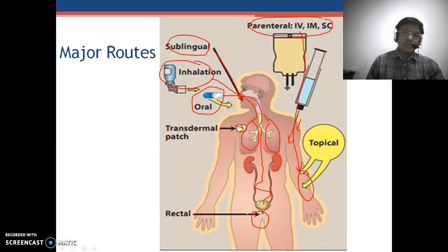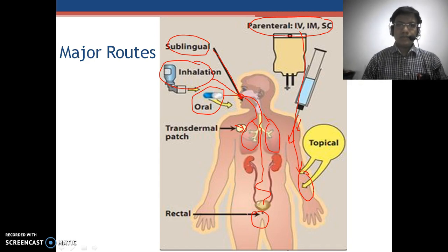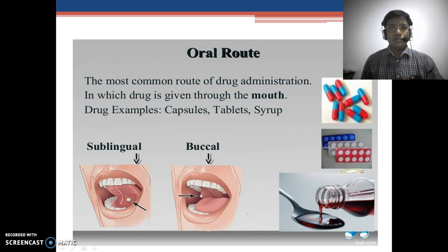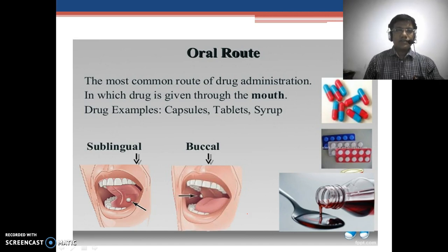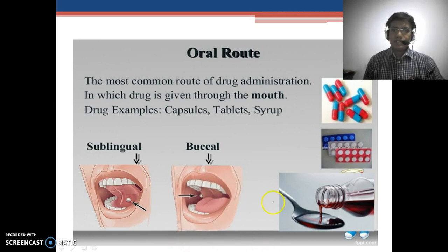So these are the major various routes available. First, let us talk about the oral route — the most common route of drug administration, in which the drug is given through the mouth. Drug examples include capsules, tablets, and syrups, as we can see here.